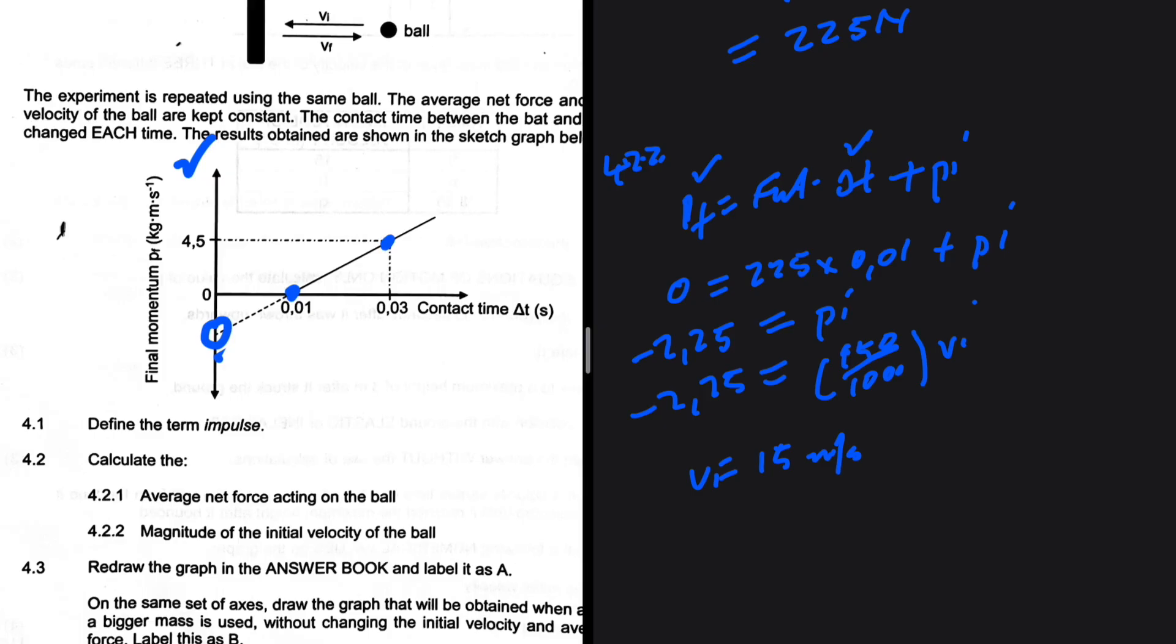So that is the answer to 4.2.2. But don't forget my question in 4.3: is your graph above the original or below? In the comment section, just say above or just say below. Let's see what people have as the answers to 4.3. Again, if you want notes, past papers that will help you understand the chemistry that you are writing on Monday to this level, go to allpastpapers.com. Geography, life sciences, and all these other subjects are also available. Here we go.